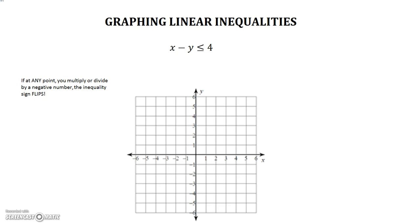Let's take the example x minus y is less than or equal to 4. This is not in slope-intercept form, y equals mx plus b. So we need to change it. We want the y to be all by itself, so we're going to subtract the x. The x's cancel and we're left with negative y is less than or equal to 4 minus x. That's just the same thing as negative x plus 4.